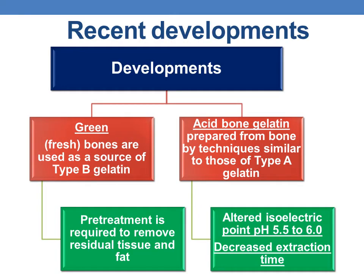Coming to the recent developments in the manufacturing of gelatin, there are two recent developments. The first one is that green or fresh bones are used as a source of type B gelatin. Because fresh bones are used, a pre-treatment is usually required when using green bones to remove the residual tissue and fat.